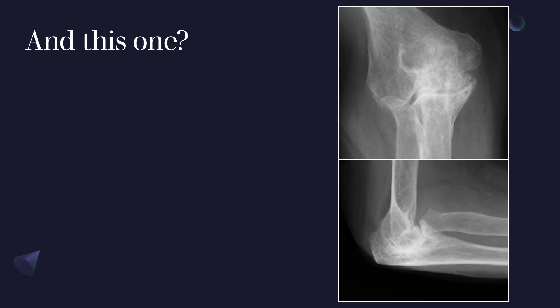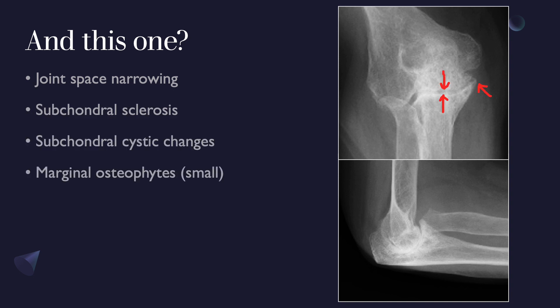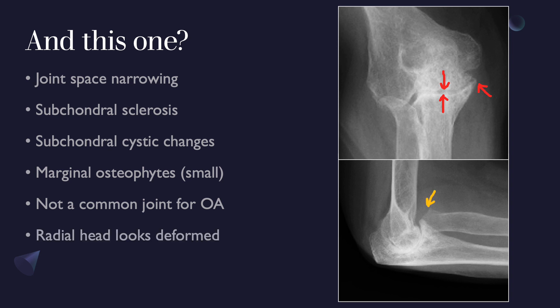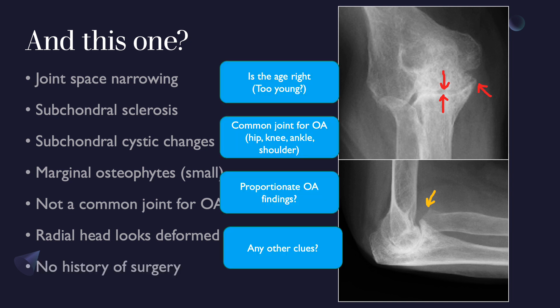In this next case, the elbow shows joint space narrowing, subchondral sclerosis, subchondral cystic changes, and marginal osteophyte formation. However, the elbow is not a common joint for OA, which starts us thinking about the underlying cause. Looking more closely, there is deformity of the radial head with no surgical history reported. Applying the algorithm: the elbow is an uncommon OA joint; the changes are somewhat disproportionate with limited osteophyte formation; and the radial head deformity is an additional clue.